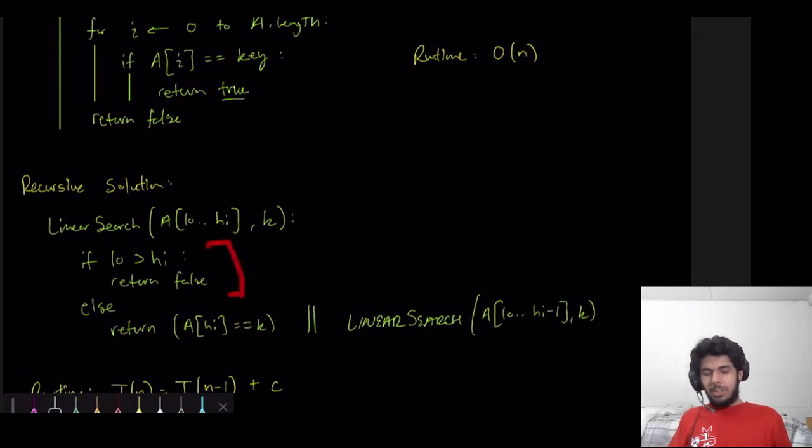So what we're doing is first we're checking, are our pointers out of whack? Meaning, is the low higher than the high? If so, we return false. That's not good. Otherwise, we're going to check, is our element in the last position equal to K? So we're just looking at the last position and seeing if that matches our key. If so, that'll be true. Or, if that's not the case, then we want to see, is the key in anywhere before that last element? So from low to high minus 1.